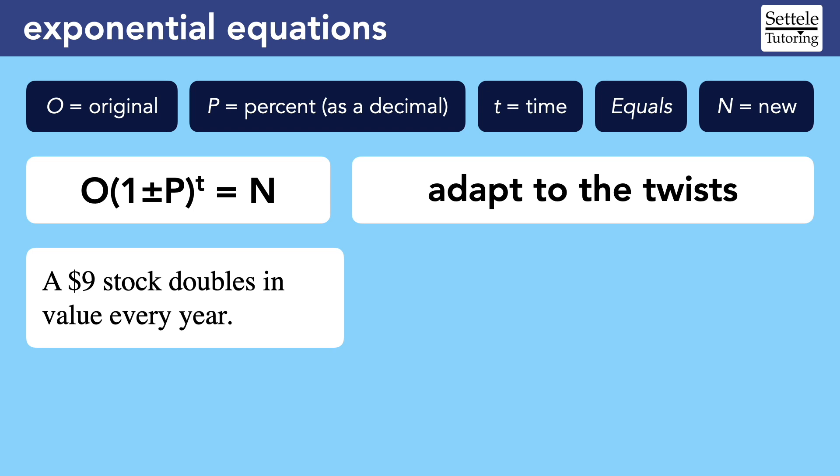Sometimes the story won't talk about exponential growth in percentage terms. For example, a $9 stock that doubles in value every year should be represented like this, with a 2 in the parentheses.